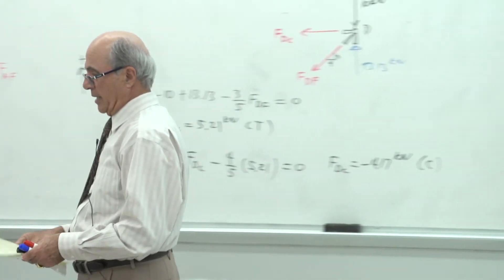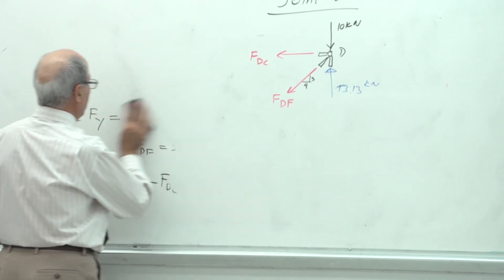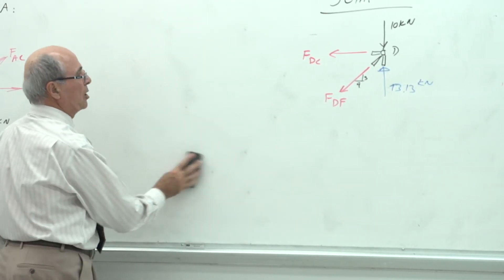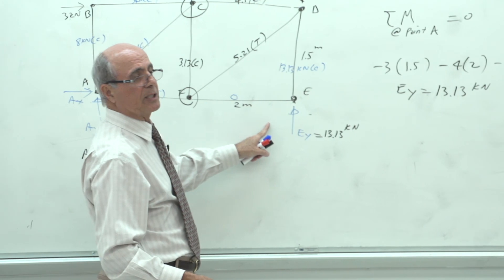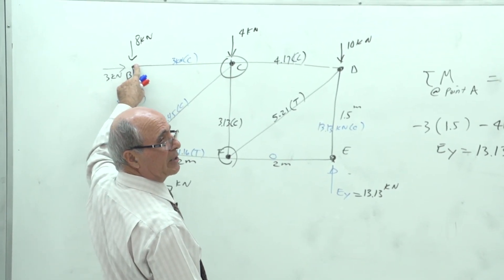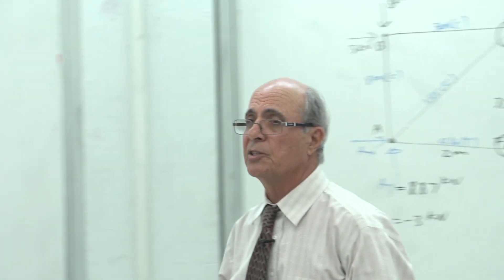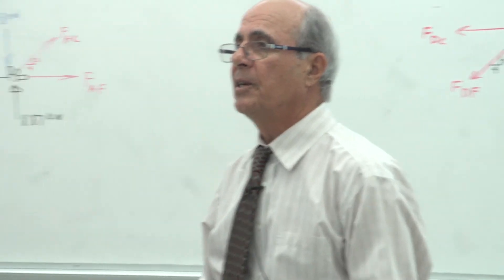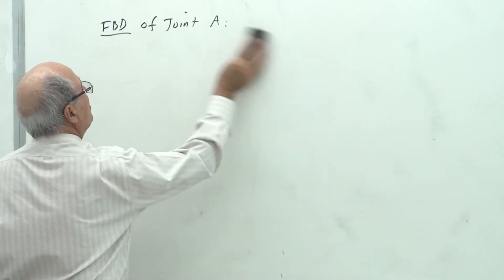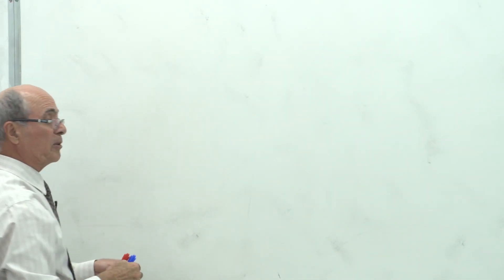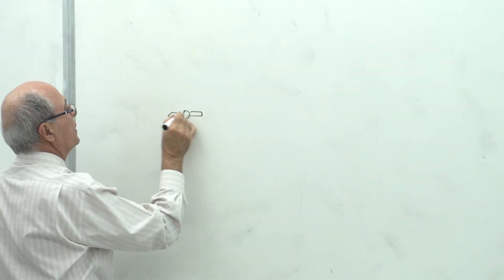Before the next example, let's discuss zero-force members — also called special members. If you can identify them early, your work becomes much simpler. Consider a joint with three members: two horizontal and one vertical, with no external load. The two horizontal members must be equal and opposite — both tension or both compression — and the vertical member must be zero. That is a zero-force member.